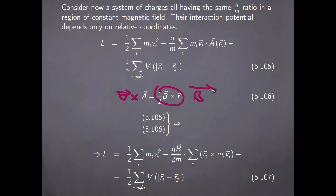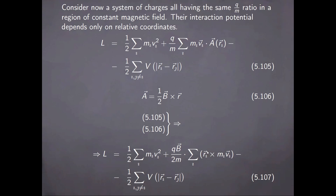If we put these two results together, the Lagrangian can then be written as seen here: the kinetic term, the interaction between the particles, and the interaction of the system with the magnetic field, which as you can see ends up involving the angular momentum of the system.